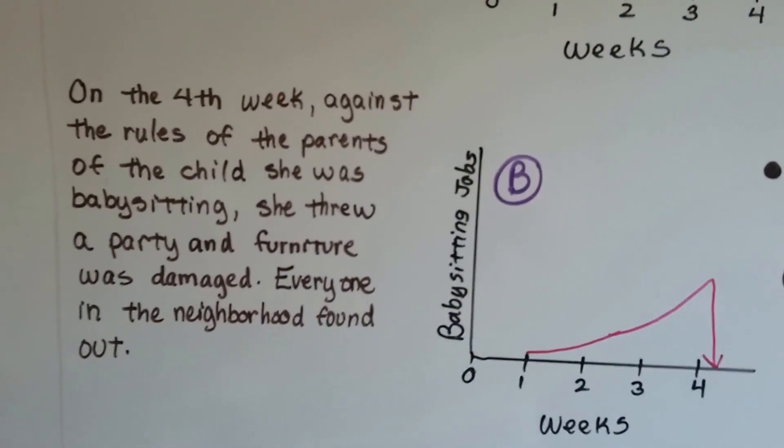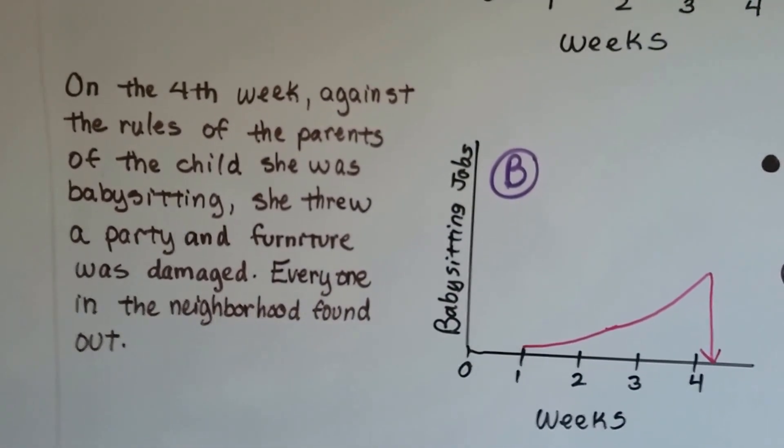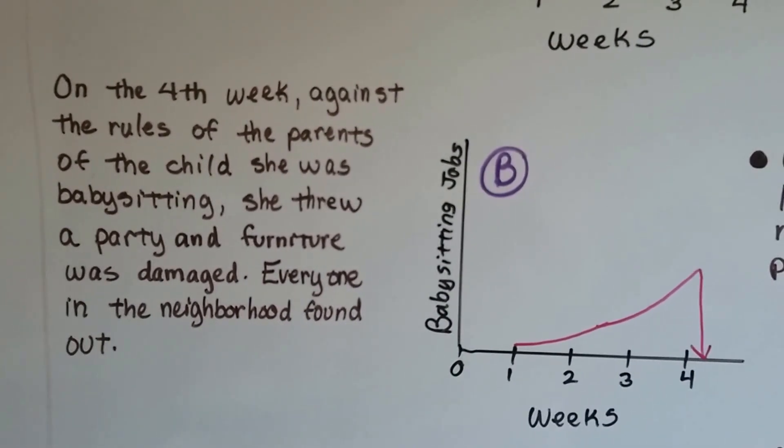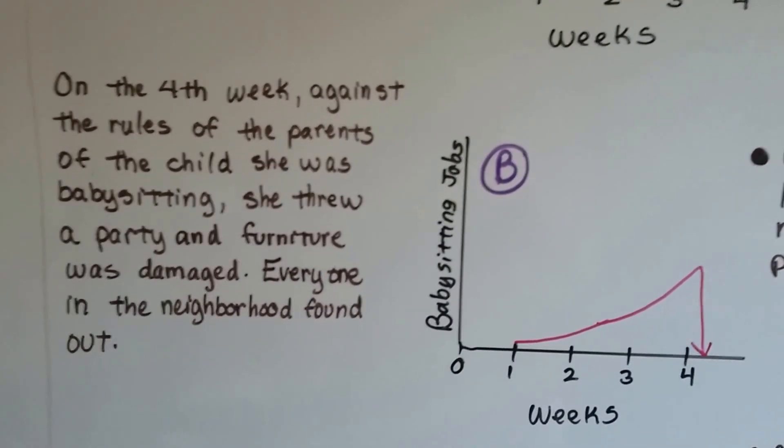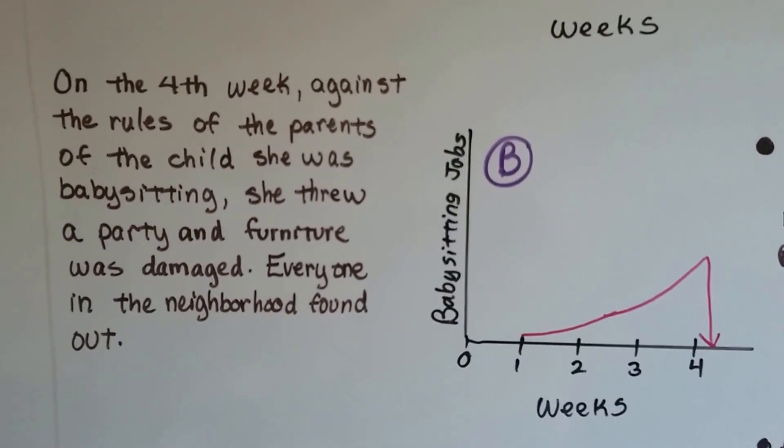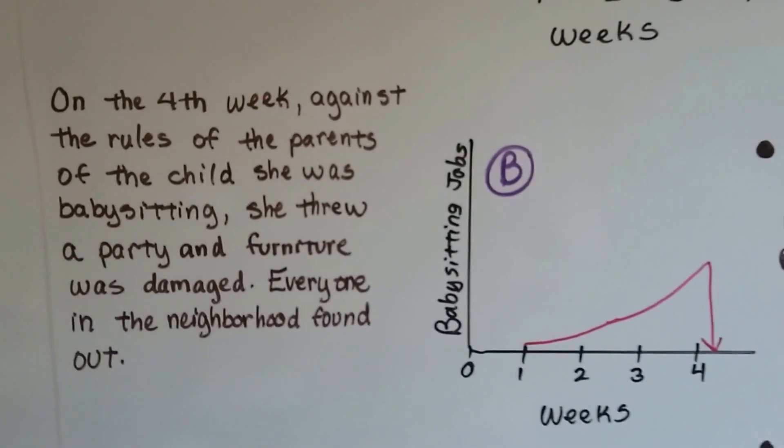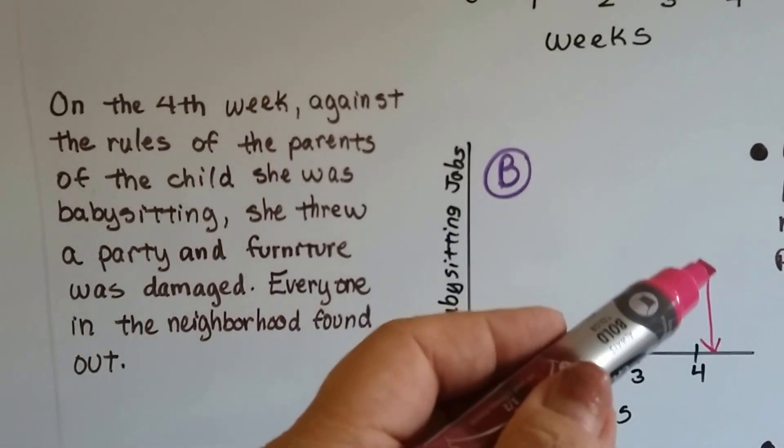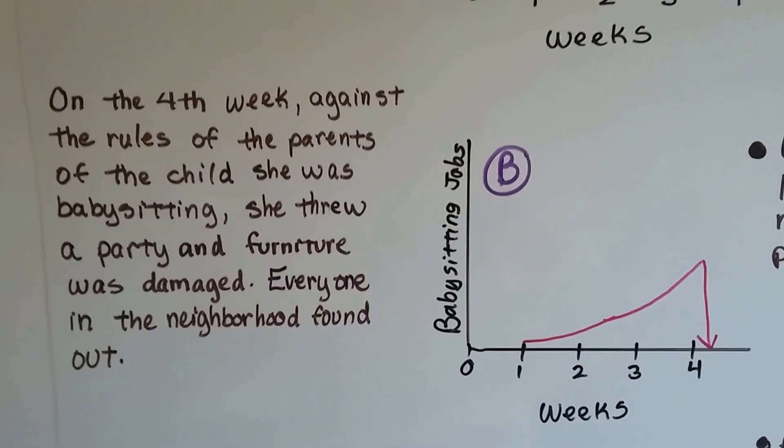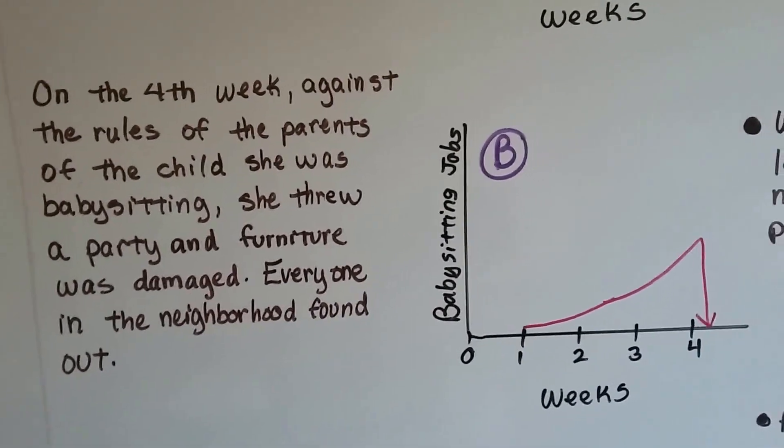On the fourth week, against the rules of the parents of the child she was babysitting, she threw a party and furniture was damaged. Everyone in the neighborhood found out. This graph represents her babysitting business. See what happens? She was going up and then it just dropped. She had no business. Nobody was asking her to babysit.